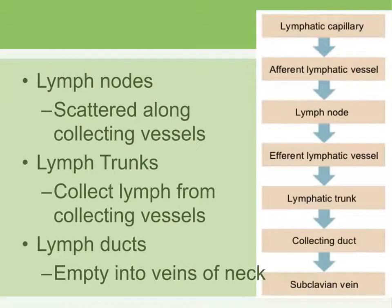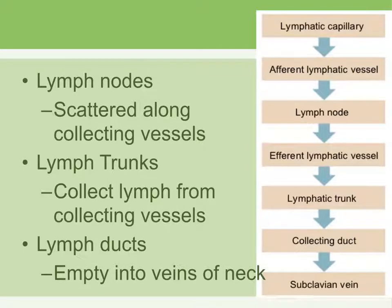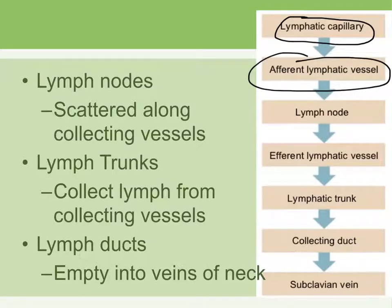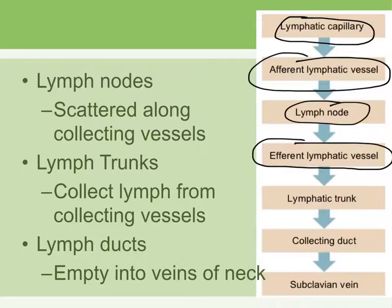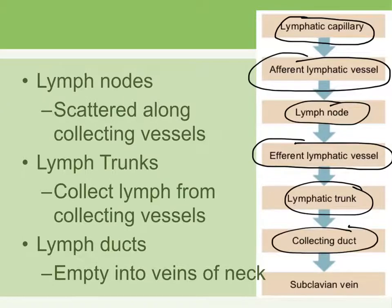The lymphatic collecting vessels lead lymph toward and away from the lymph nodes, which are scattered throughout the body and filter out any foreign or harmful material. The lymph from the lymph nodes is then collected by the lymph trunks, which empty into the lymph ducts, which then drain into the vein. The general order is: lymphatic capillaries → afferent lymphatic vessels (going toward the lymph node) → lymph node → efferent lymphatic vessels (away from the lymph node) → lymphatic trunks → collecting ducts (lymph ducts) → subclavian vein.